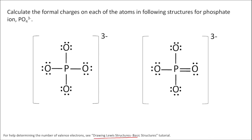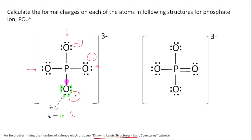Starting with the left structure for phosphate, let's look at one of the oxygen atoms. Formal charge equals six valence electrons minus six non-bonding electrons minus one (half the bonding electrons, one from each bond). Six minus six minus one equals negative one. All of the remaining oxygen atoms in this structure have the same arrangement — six non-bonding electrons and one bond to phosphorus — so they will all also have a formal charge of negative one.